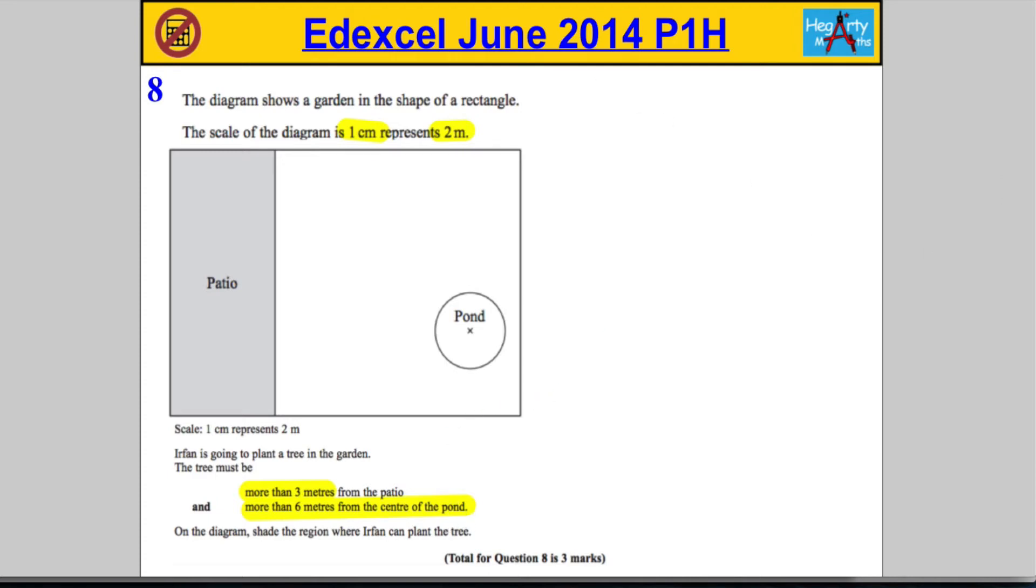This is a loci problem. We're going to need some mathematical instruments here - a ruler and a compass. Get your ruler and compass out, have them ready to go. Right, let's go to our information and start getting it into the diagram.